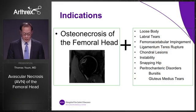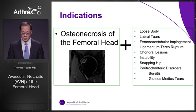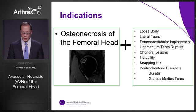When I first implemented this procedure, my indications for this type of surgery was osteonecrosis of the femoral head in conjunction with an intra-articular pathology addressable by hip arthroscopy, which includes loose body, labral tears, femoral acetabular impingement, ligamentum teres rupture, chondral lesions, instability, snapping hip, and extra-articular disorders including peritrochanteric disorders such as greater trochanteric bursitis and gluteus medius tears.